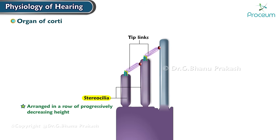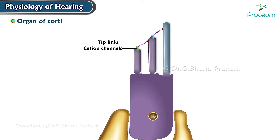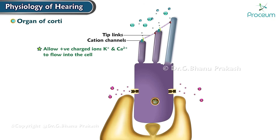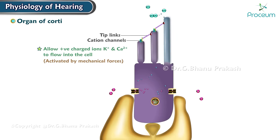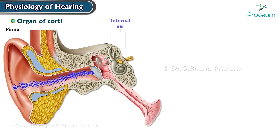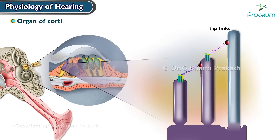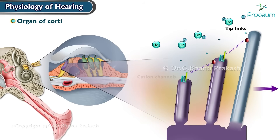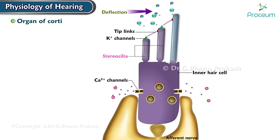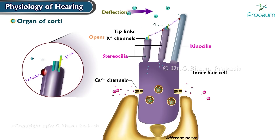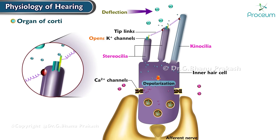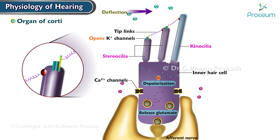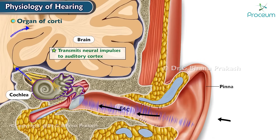Tip links contain mechanically sensitive cation channels, which allow positively charged ions such as potassium and calcium to flow into the cell when activated by mechanical forces. When sound waves enter the inner ear and cause the stereocilia to bend, the tip links stretch and pull on these channels, opening them and allowing ions to flow into the hair cell. Flexion of the stereocilia toward the kinocilium opens the potassium channels, depolarizing the inner hair cell and causing calcium influx that stimulates release of the neurotransmitter glutamate, which then stimulates afferent neurons to transmit neural impulses to the auditory cortex.